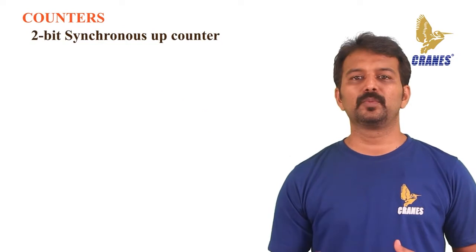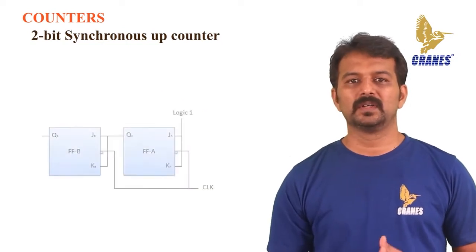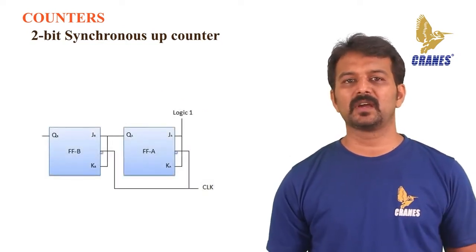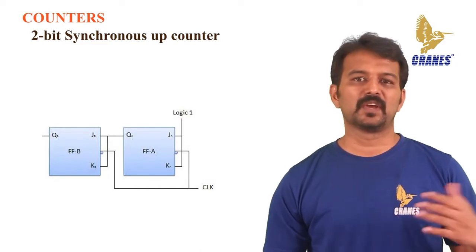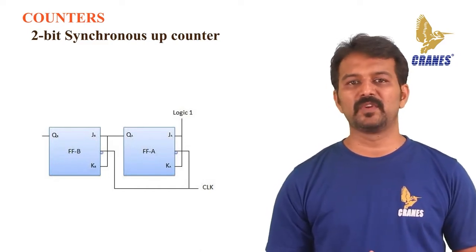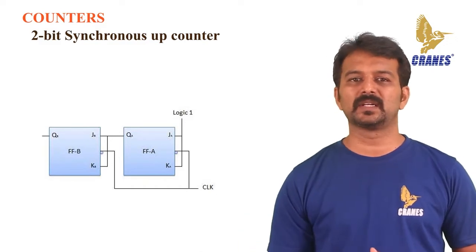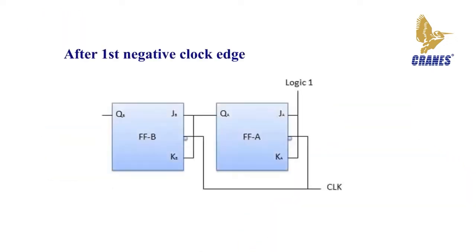In a 2-bit synchronous up counter, the JA and KA inputs of FFA are tied to logic 1, so FFA will work as a toggle flip-flop. The JB and KB inputs are connected to QA. Initially, both flip-flops will be in the reset state — that is, QB and QA equal 0.